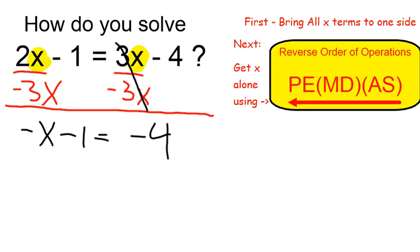Next, I want to get x alone by using reverse order of operations. To get rid of the minus 1, I'm going to add 1. And if I do that on one side, of course, I have to do that on the other. And that leaves me with minus x is equal to negative 4 plus 1 is negative 3.